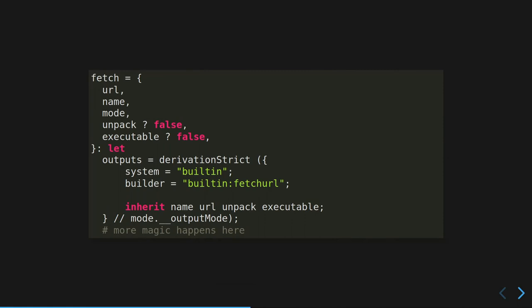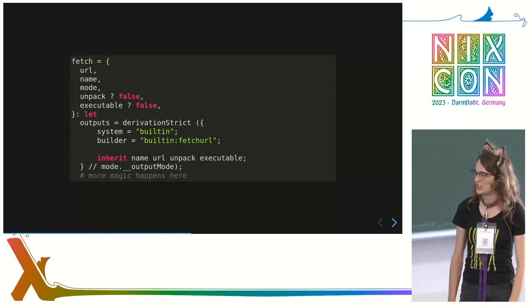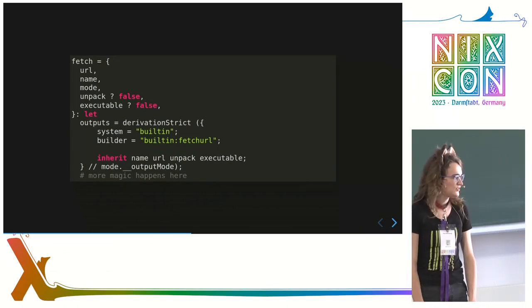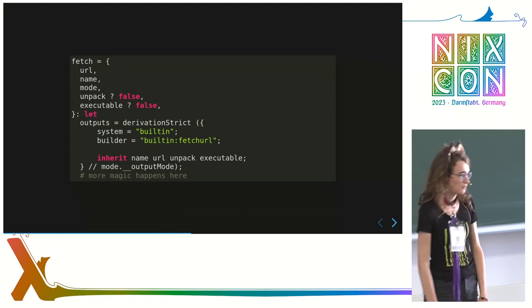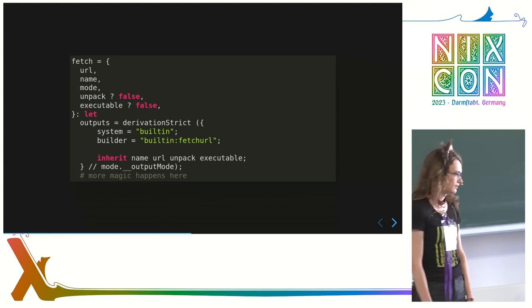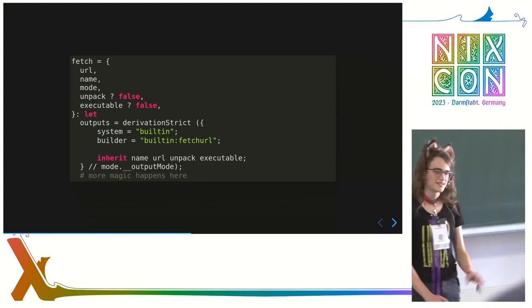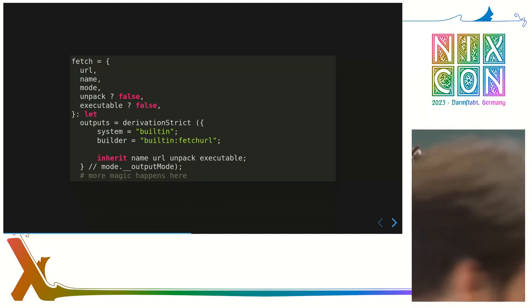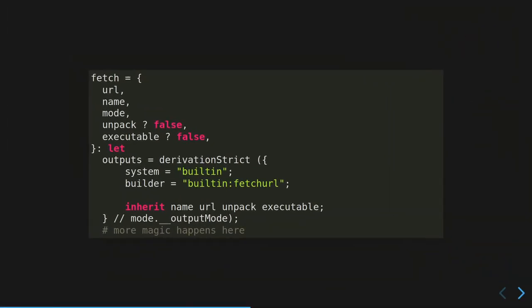And fetchURL got the same kind of makeover — pass in a URL, a name, and an output mode that describes the hash of the file. Interestingly, I don't use fetchurl the builtin, but fetchurl the built-in, which is a lot more obscure and is used only during the bootstrap in Nix packages, and runs at build time instead of at evaluation time. Now that I've replaced all the basic components of the Nix expression language, I can start building packages.